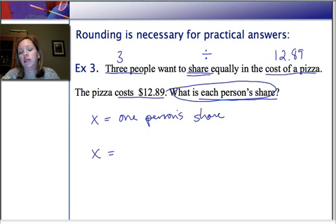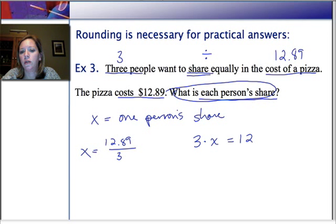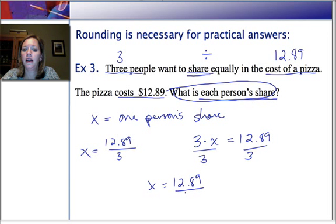But what I don't know is what is each person's share of the pizza, right? So, I know that if x represents one person's share, I could set up this equation a couple different ways. The one that's most obvious to me is to say that one person's share, x, is going to equal the entire cost of the pizza, $12.89, divided by 3. That just gives you the operation to do. Another way of representing it is to say, 3 times each person's share is going to be the total cost of the pizza. But, of course, here we would still end up dividing both sides of the equation by 3. And that would still leave us with this calculation of x = 12.89 divided by 3.